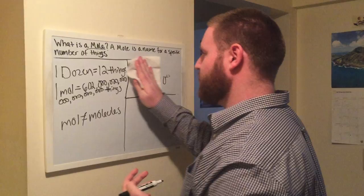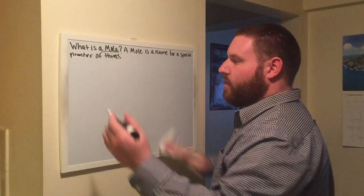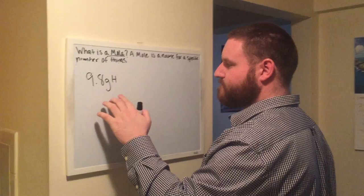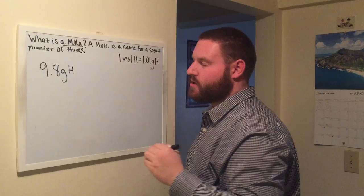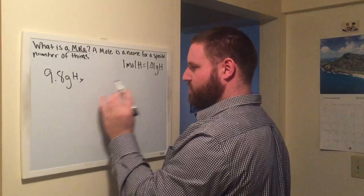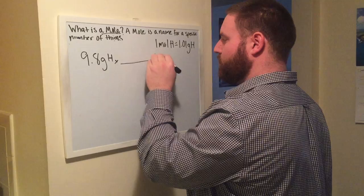Now, a problem we can work out in explaining this really quick is we're given 9.8 grams of hydrogen. Now, talking about moles of hydrogen, one mole of hydrogen is equal to 1.01 grams of hydrogen. So we see 9.8 grams of hydrogen here. We want to get rid of grams and finish with moles.